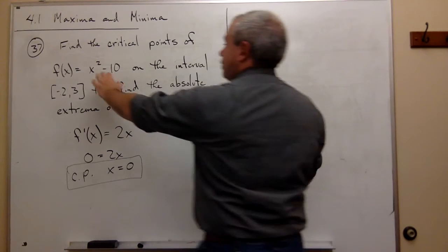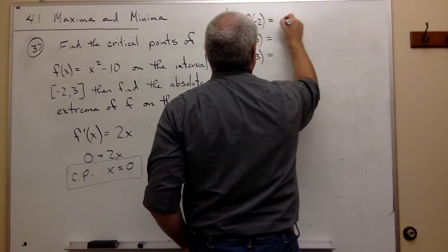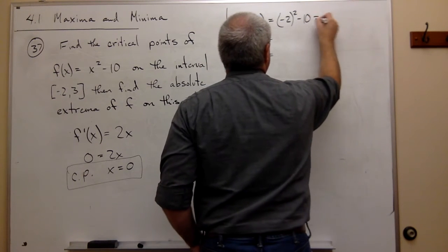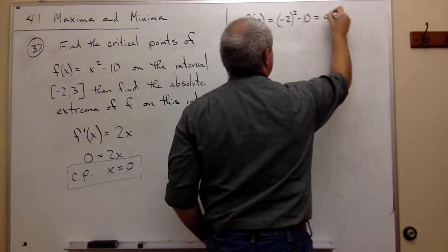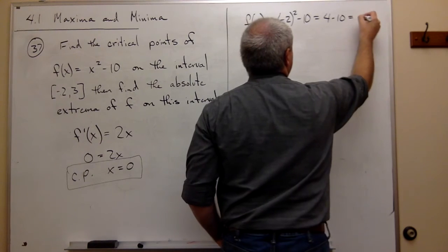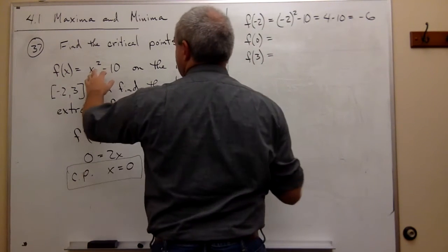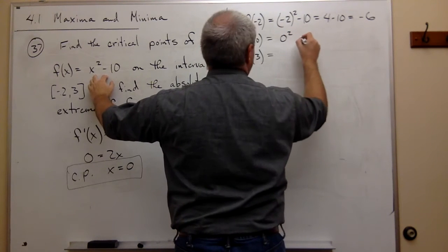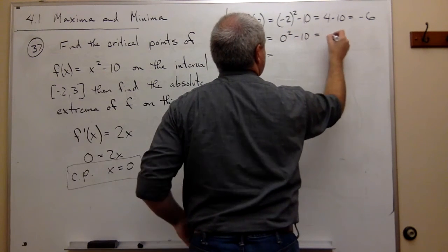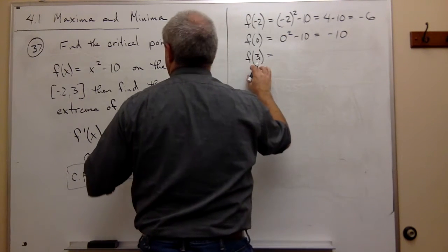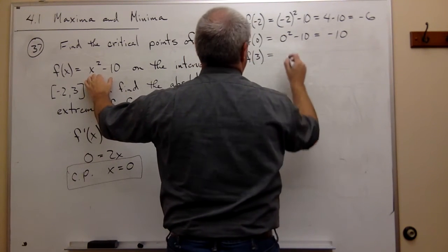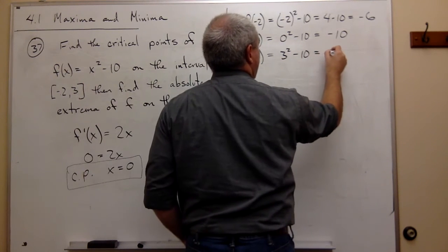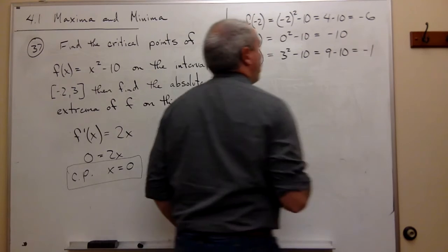If I plug negative two into the original function, I get negative two squared minus 10, which is four minus 10, or negative six. I plug in zero to my original function and I get zero squared minus 10, which is just negative 10. And if I plug in three to my original function, I get three squared minus 10, which is nine minus 10, which is negative one.